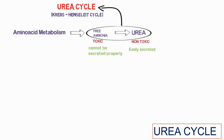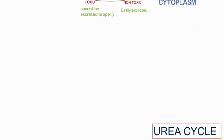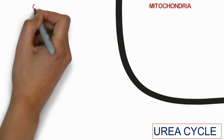The urea cycle takes place in the mitochondria and cytoplasm. This part of the cell is the mitochondria and this part of the cell is the cytoplasm.